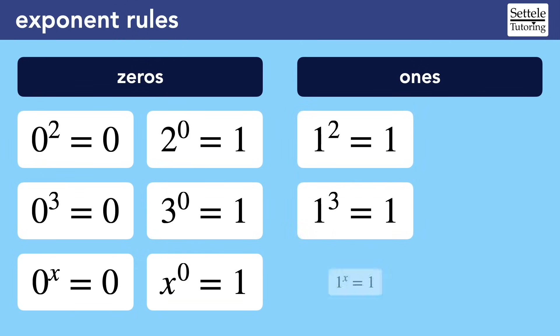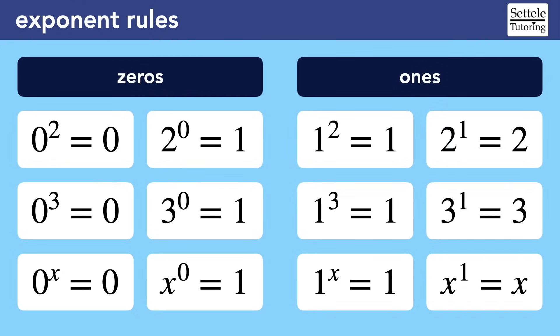When the base is 1, the exponent won't matter, because 1 raised to any exponent is 1. When 1 is the exponent, it's as if there's no exponent at all. Every base raised to the 1st power is just the base. Remember that every number without an exponent has a hidden 1 as the exponent, that we don't write unless we need to see it.